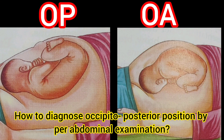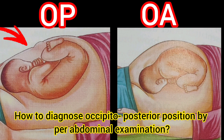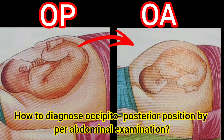How to Diagnose Occipitoposterior Position on Per-Abdominal Examination. On Inspection: In Occipitoposterior position, the abdomen below the umbilicus looks flat, whereas in Occipitoanterior position, the abdomen below the umbilicus looks bulging.